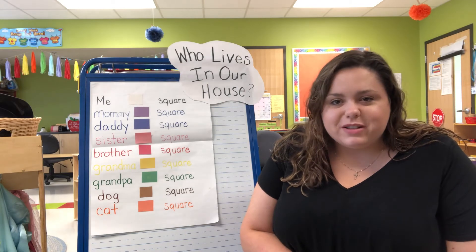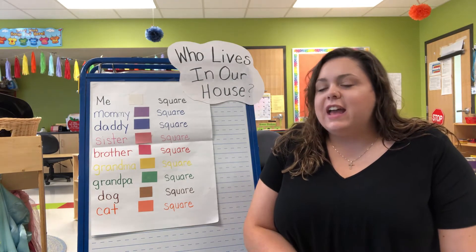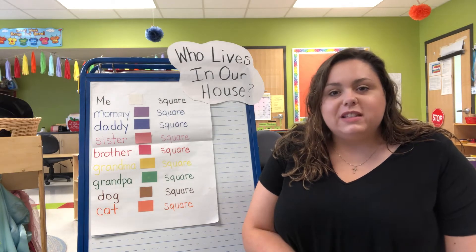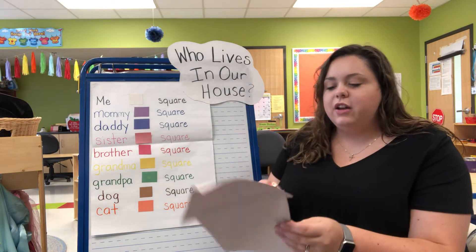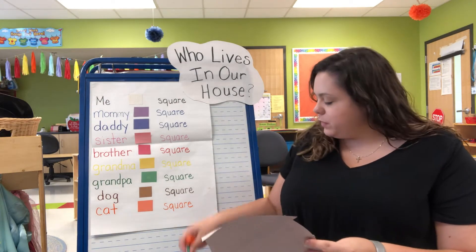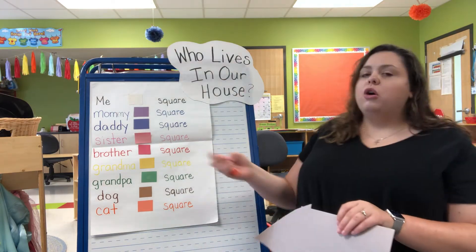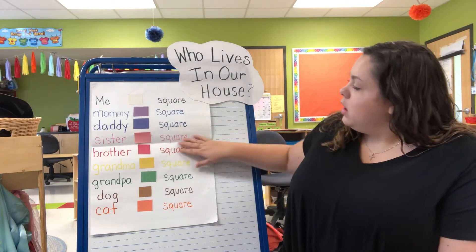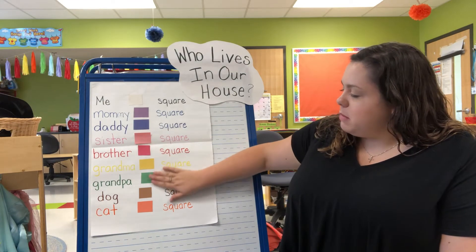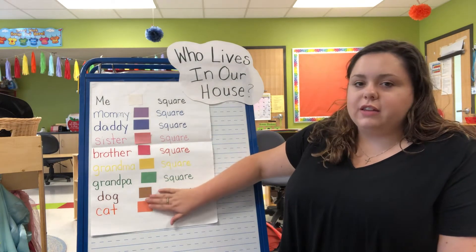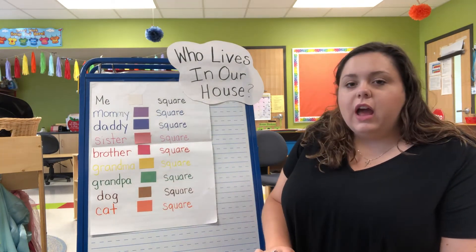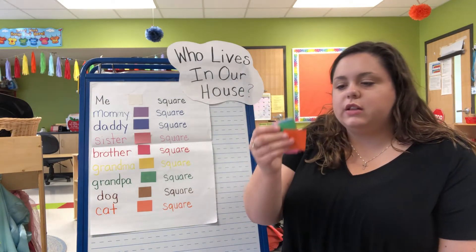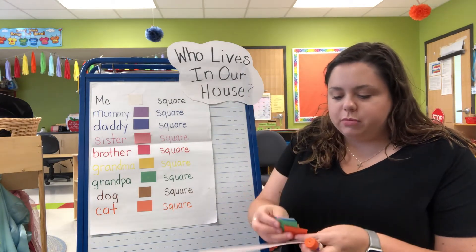Some might even live with their grandparents, and that is all perfect. Each family looks different, just like each person looks different. We're going to show our different families on our house. If you look at our chart here, we have all the different people that might live in your house — even your cat and your dog.